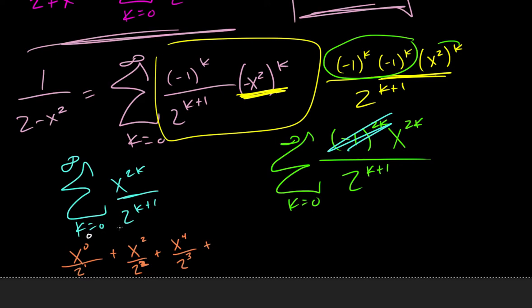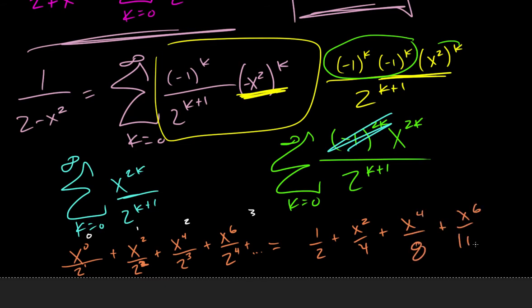This is hard to keep track, so this is 0, this is 1, this is 2. Let's just plug in a 3, it's going to be x to the 6 over 2 to the 4. And so if we simplify that, x to the 0 is just 1, and then it's going to be x squared over 4, x to the 4 over 8, and x to the 6 over 16, and so on.